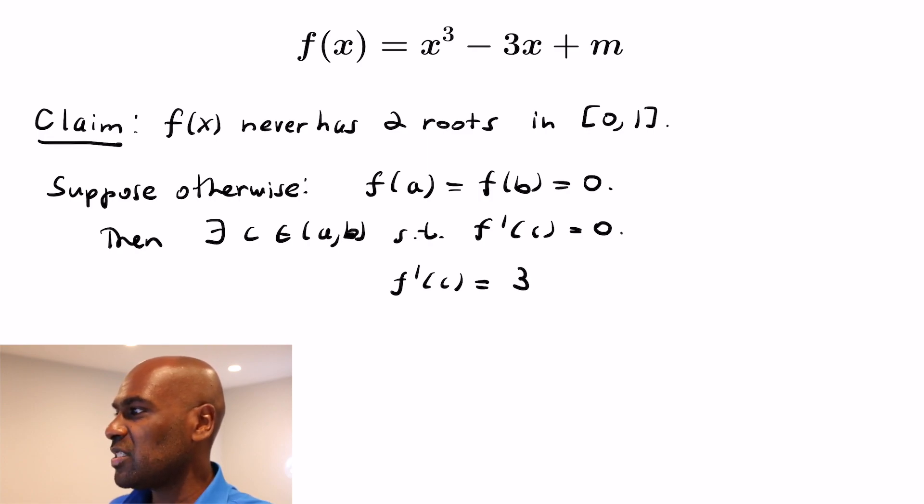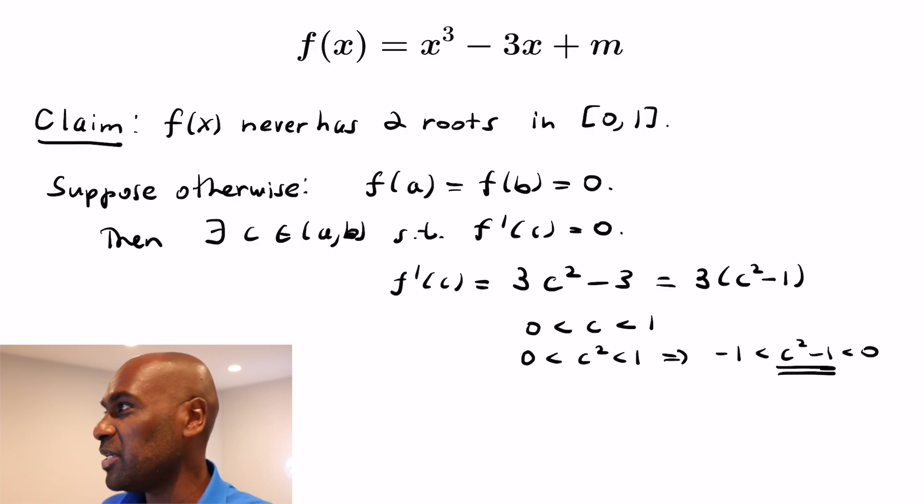Okay so f'(c) = 0 but f'(c) = 3c² - 3 which is 3(c² - 1). Okay but c is strictly in the interval (a,b) which itself sits inside of the closed interval [0,1]. So c has to be between 0 and 1 strictly which means 0 < c, c² < 1. And so c² - 1 is between -1 and 0 strictly. There's no way it's ever going to be 0. Okay so that's a problem since f'(c) is 0 itself. Contradiction.